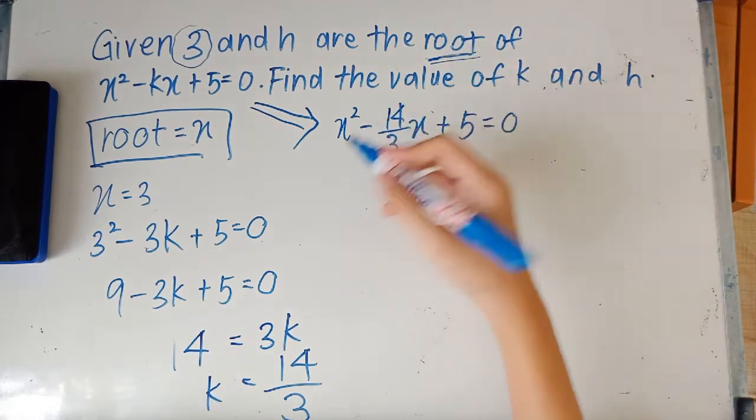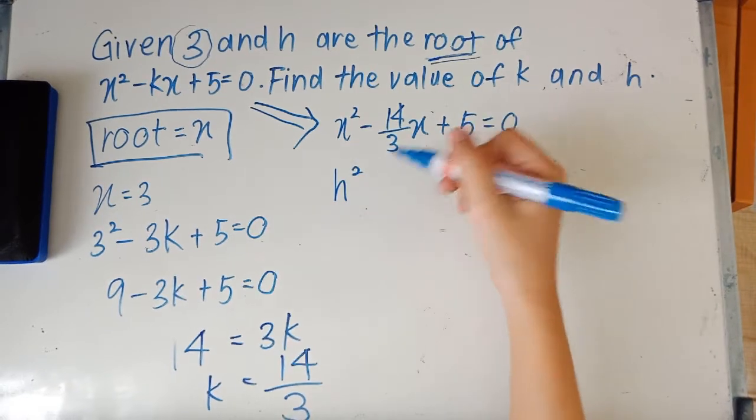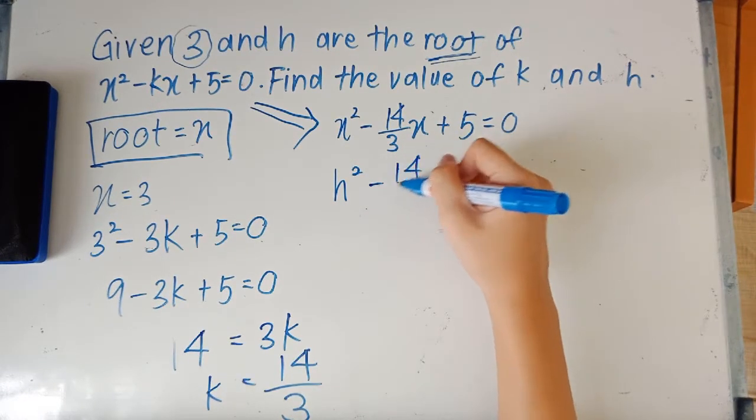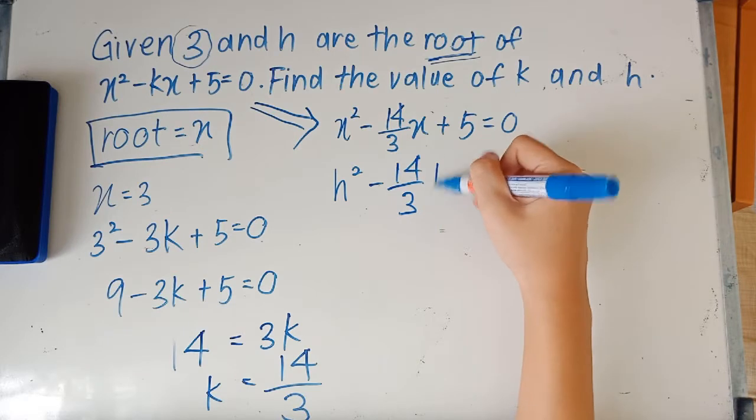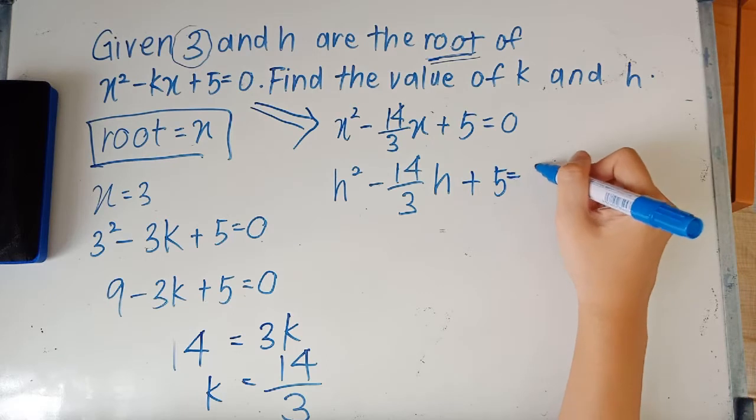So you can go ahead and substitute h into this, so we'll get h² - 14/3 h + 5 = 0.